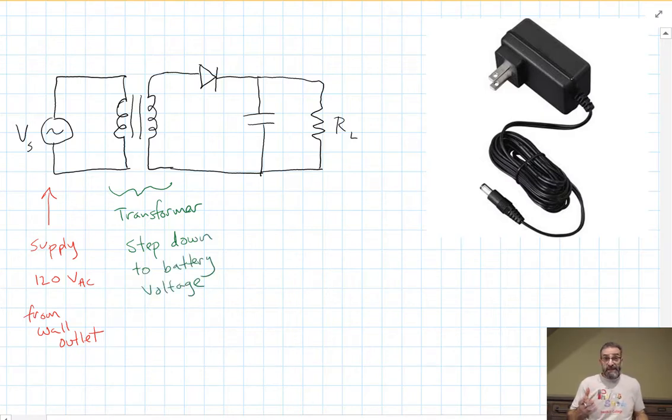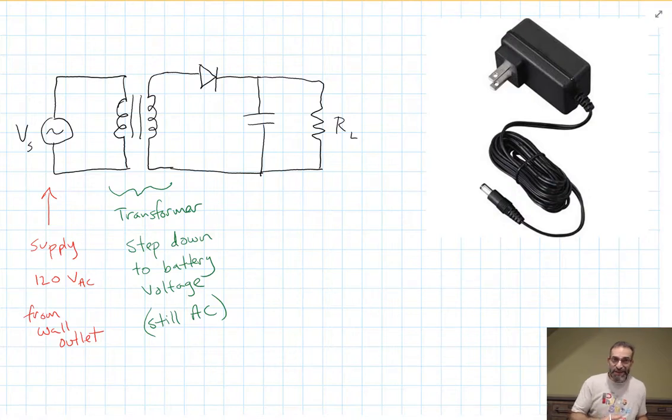So that steps the voltage down from the 120 volts that comes out of the wall down to whatever voltage the device operates at normally. If you would operate your device on a 9 volt battery, this would step it down to 9 volts so you could operate your device on this instead. But what's the problem? It's still AC power, alternating current, because you have to have the transformer while you have AC current. You can't make it DC and then put a transformer in there.